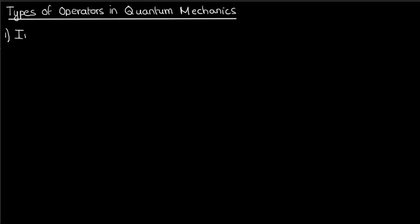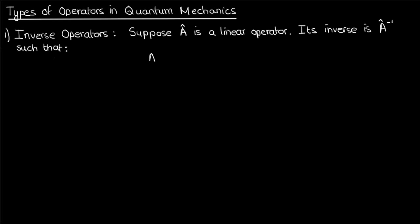Let's start this lecture by talking about inverse operators. Suppose we have an operator A hat that's linear. We talked about linear operators in the previous video. The inverse of A hat is another operator, A hat inverse, such that when A hat and A hat inverse are both applied in sequence, the resulting operator is just the identity I hat.